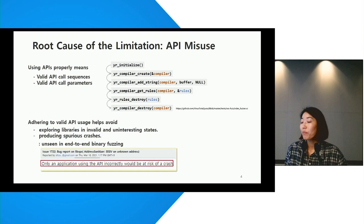Adhering to valid API uses is essential in library fuzzing, as it helps avoid wasting time exploring libraries in an invalid and thus uninteresting state. Furthermore, it prevents spurious crashes. It is important to note that these spurious crashes do not occur in end-to-end binary fuzzing, while they do occur in library fuzzing. We also have noticed that the developers of project communities were not particularly motivated to address the code issues caused by API misuse.